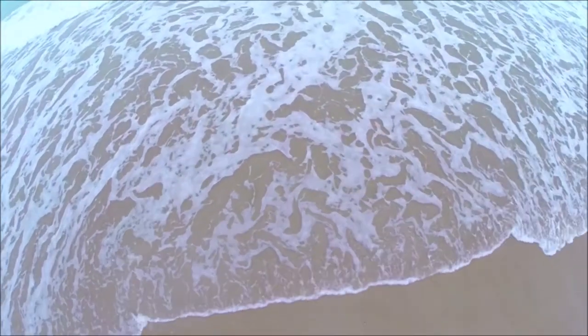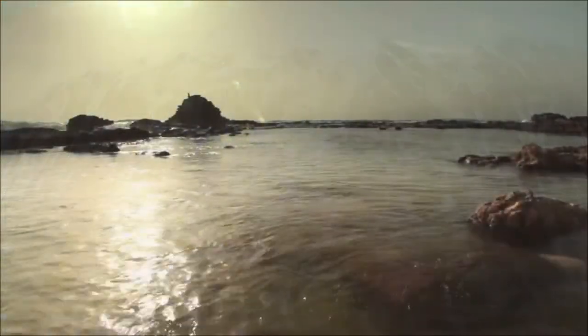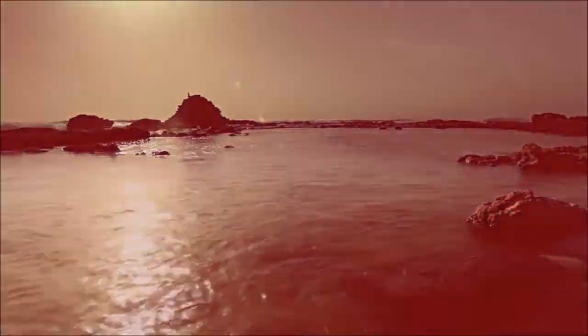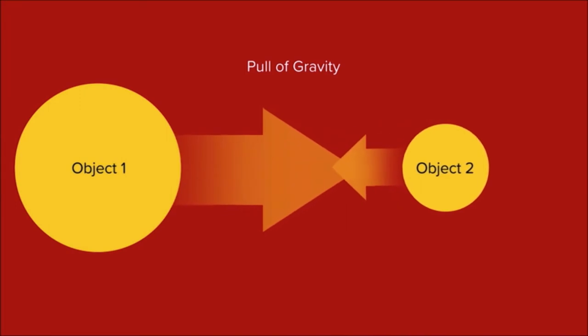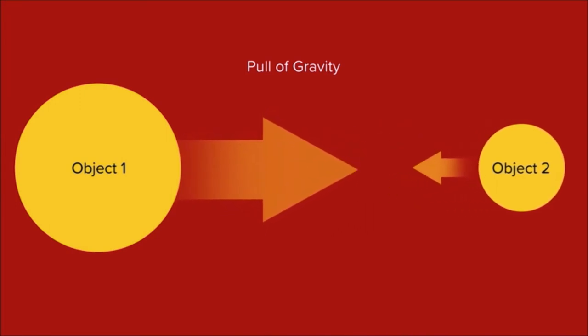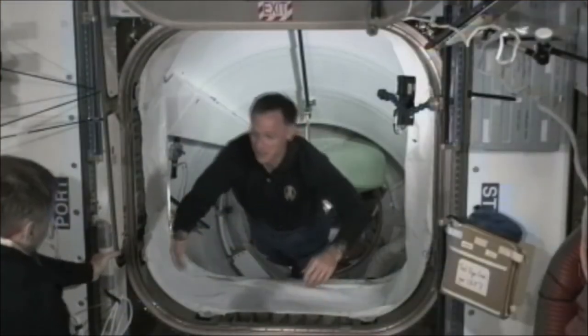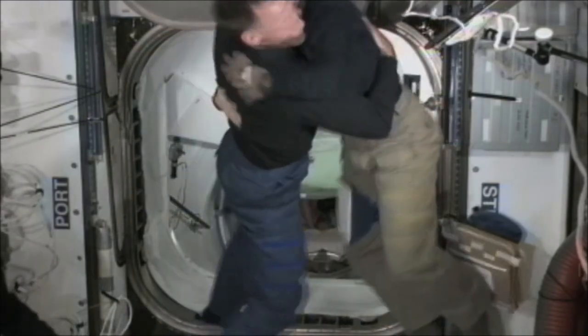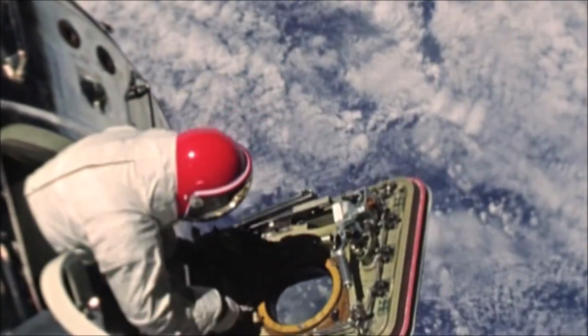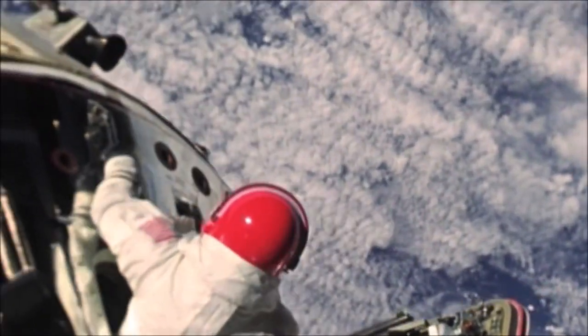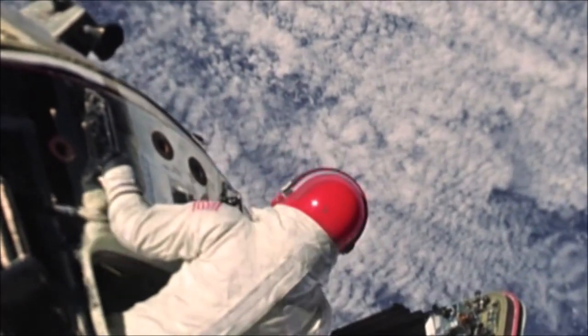Tides on earth are caused by the moon's gravitational force pulling the oceans towards it. The pull of gravity decreases when two objects move further apart, like when astronauts leave earth and go into space. It also means that gravitational pull increases when those objects get closer to each other. So the force of gravity between two objects is the result of their masses and their distance apart.